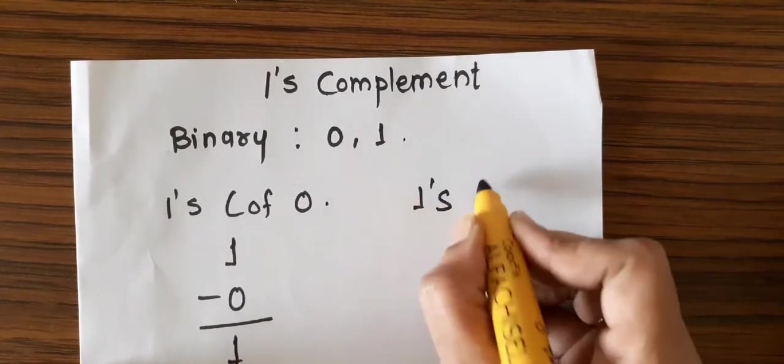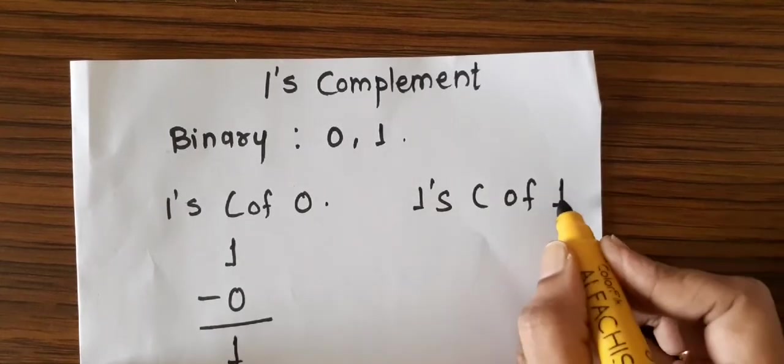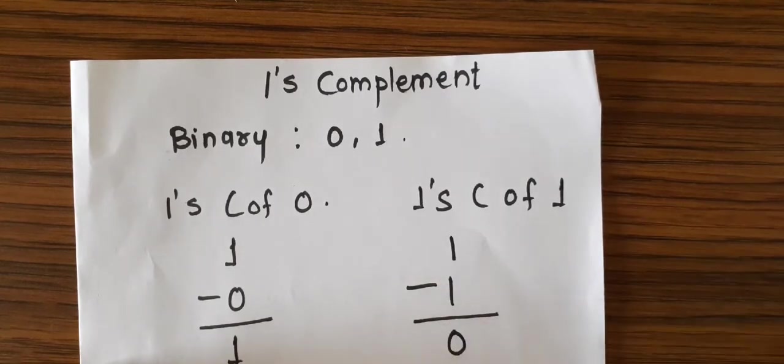To get the 1's complement of 1, we have to subtract this 1 from the maximum valued bit 1 from binary to get 0. Since only 2 bits are there in binary, we usually say 1's complement can be obtained by inverting bits: 1 to 0 and 0 to 1.